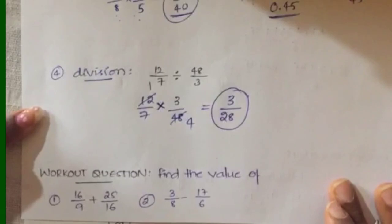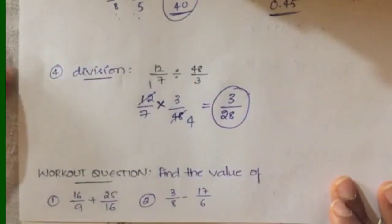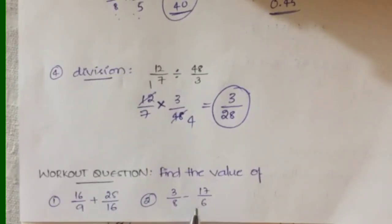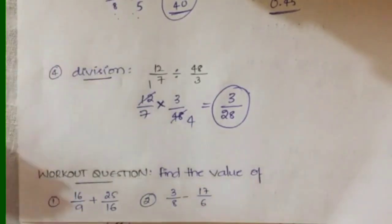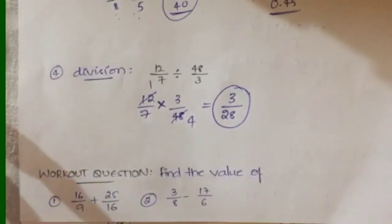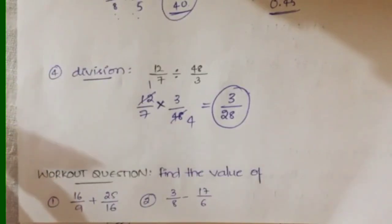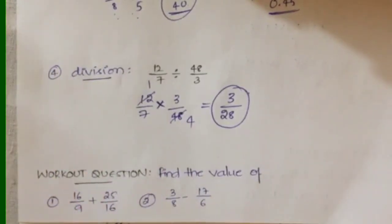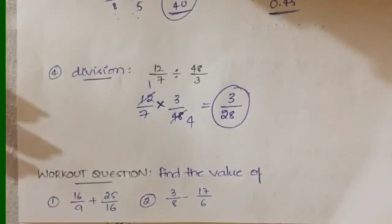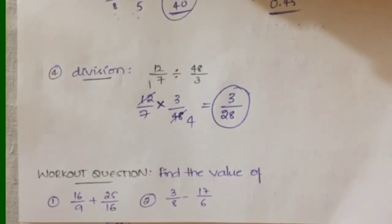That's all for this video. The workout questions for this video are: 16/9 + 25/16, and 3/8 − 17/6. Try to solve these questions and mention your answers in the comments — I'll tell you whether they're correct or wrong. If you haven't subscribed to my channel, please subscribe, share with your friends, and like this video. If you have any suggestions or want me to cover other topics, mention them in the comment section below. Thank you for watching!